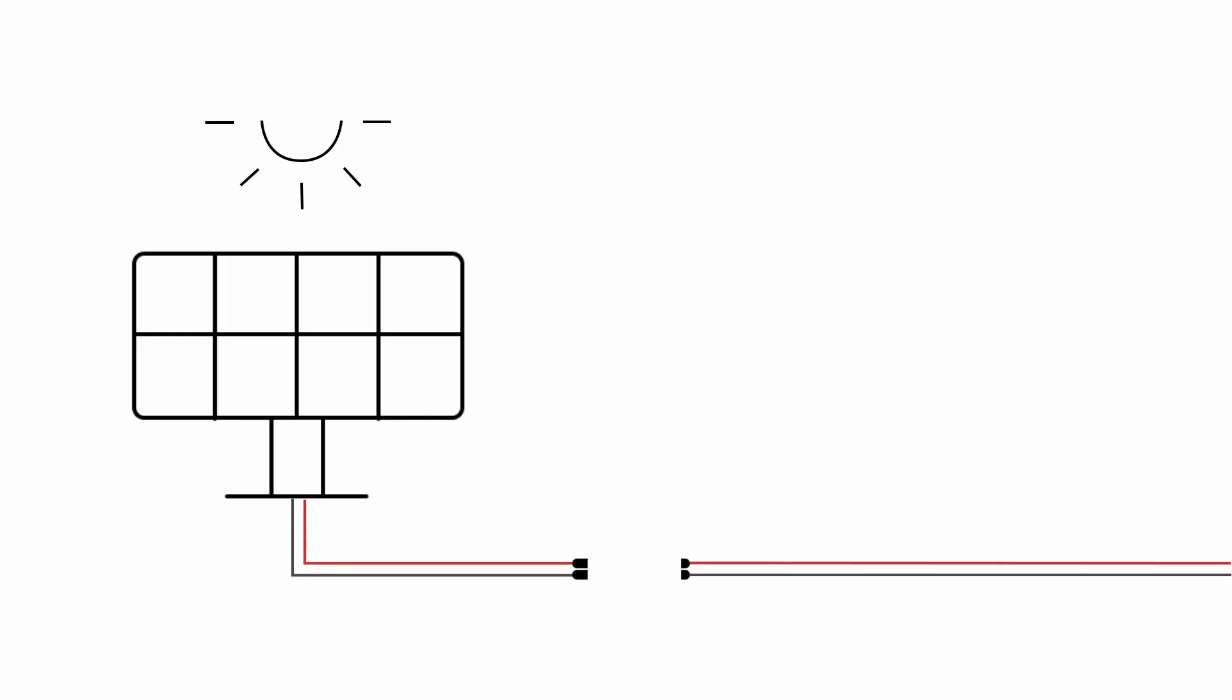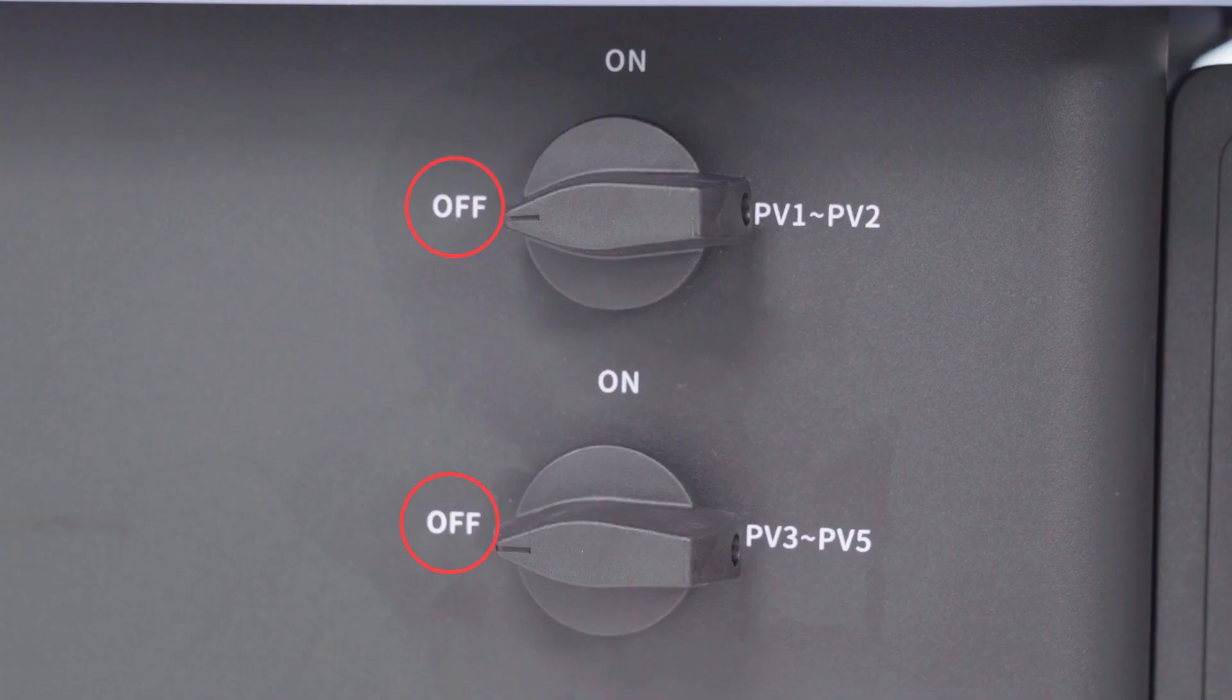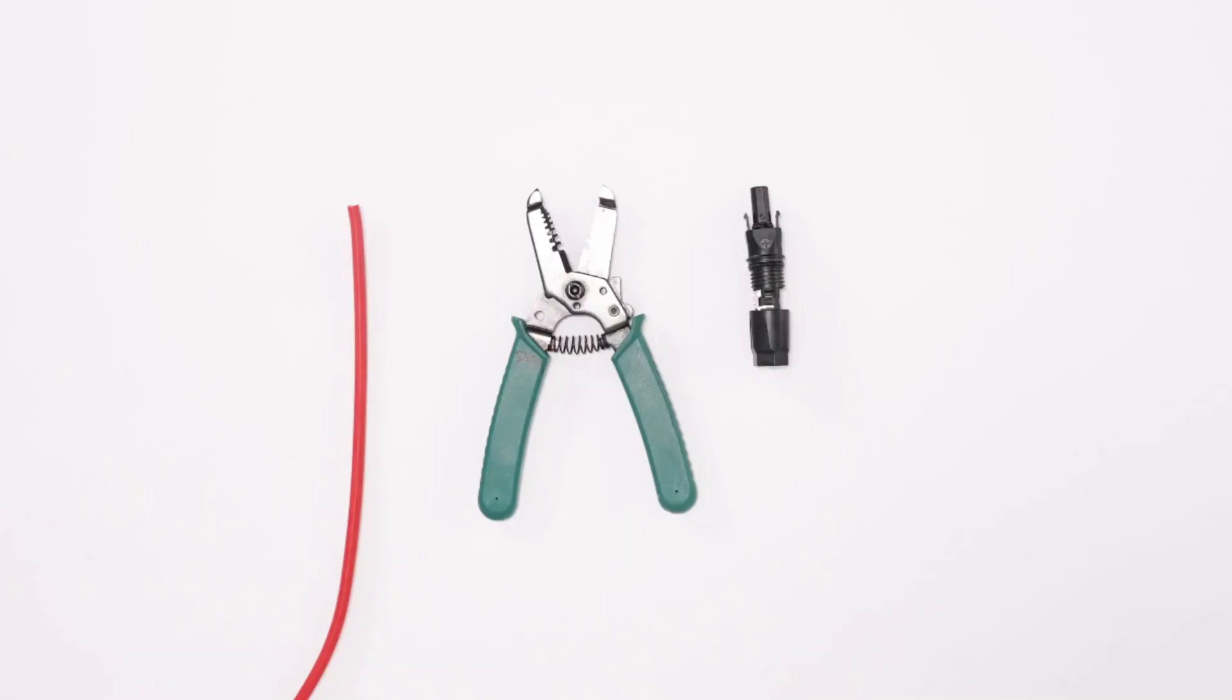Disconnecting the PV array: make sure the AC circuit breaker is connected and the DC switch is in the off position before stripping off the cable insulation.